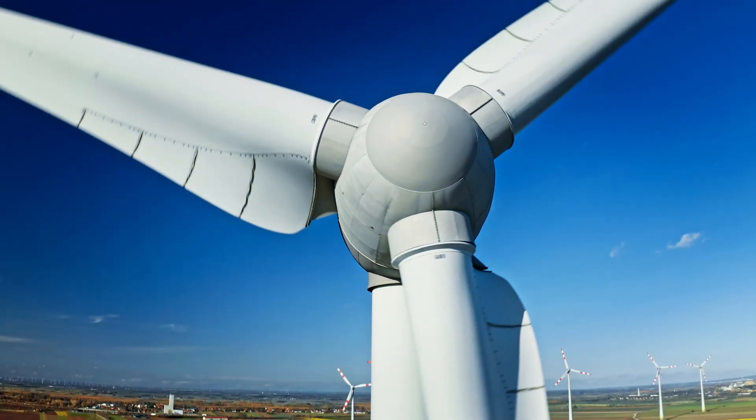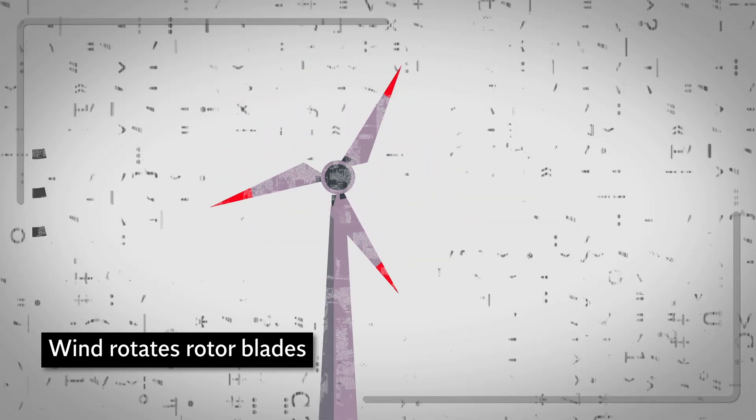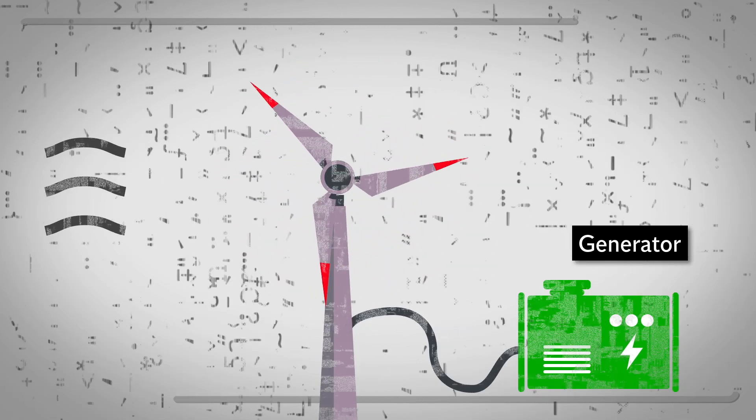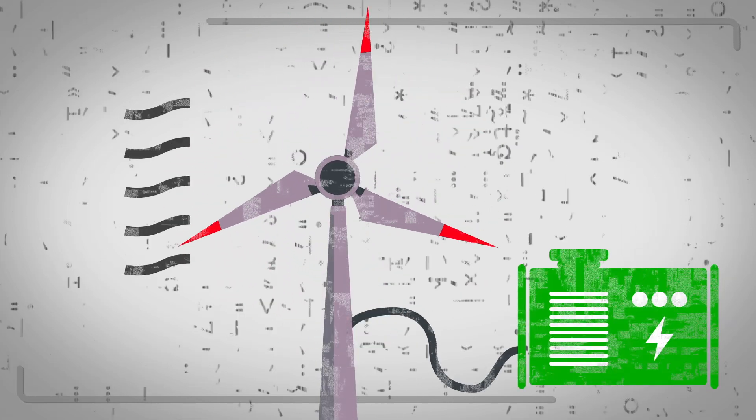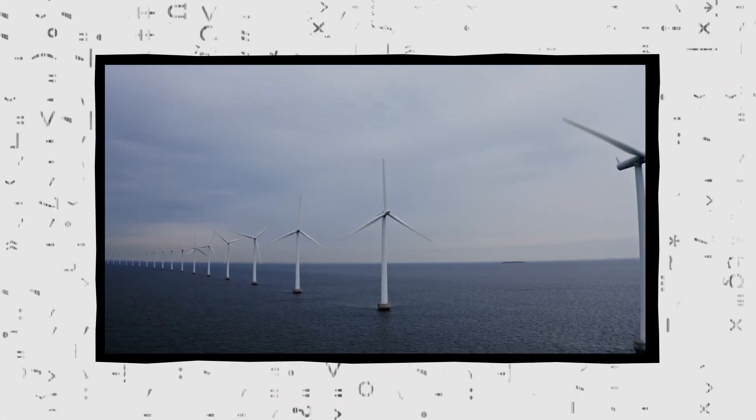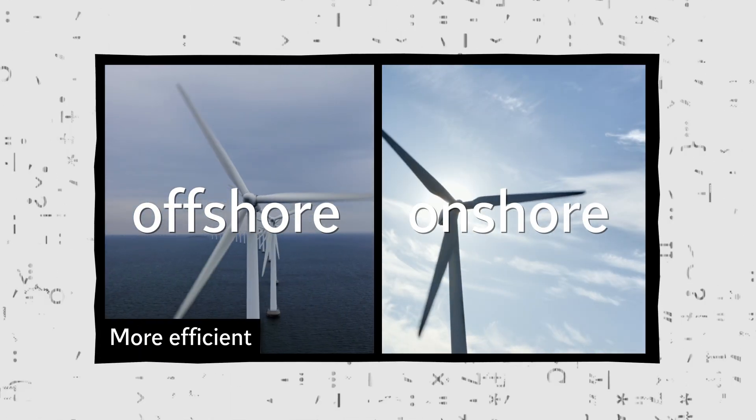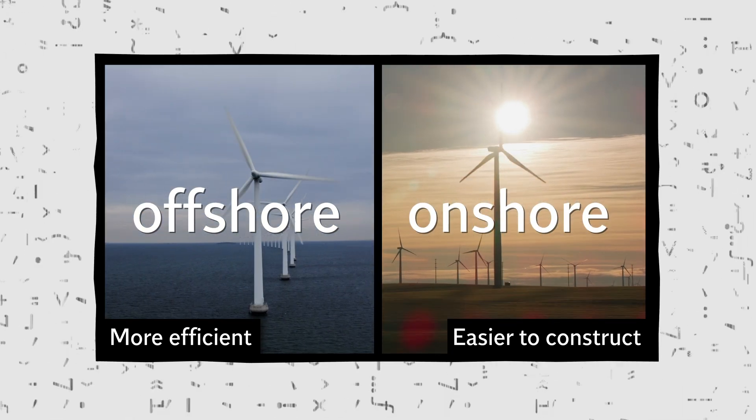Wind power generates electricity via movement. On and offshore wind farms use the wind to rotate a turbine's rotor blades, and the rotor connects to an electricity generator. The larger the rotor, the more wind energy it can capture to be converted to electricity. As the wind is stronger offshore, wind turbines located at sea have proven to be more efficient, as compared to the onshore turbines. But onshore wind turbines are easier to construct.